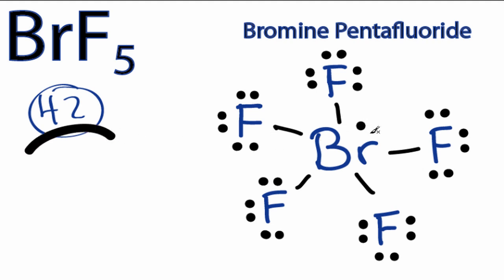We're just going to put those right here on the bromine. Bromine is in period 4 on the periodic table and it can have more than 8 valence electrons. If you were to check the formal charge for this structure, you'd see that the formal charge for each atom in BrF5 is zero.